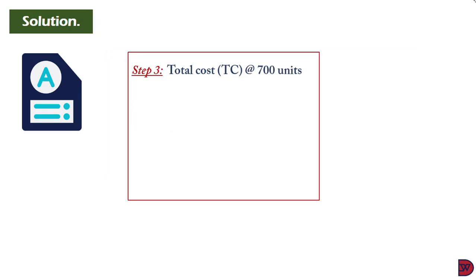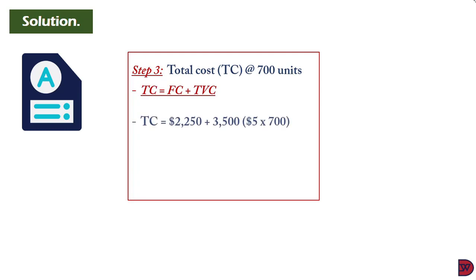Step three: find the total cost at 700 units. We already have the fixed cost of $2,250 and the variable cost per unit of $5. Total variable cost = 700 units × $5 = $3,500. Therefore, total cost = $2,250 + $3,500 = $5,750 for an output or activity level of 700 units.